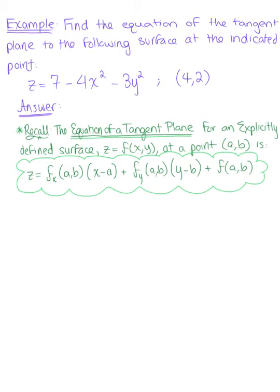Find the equation for the tangent plane defined explicitly at the indicated point. Our explicitly defined surface is z equals 7 minus 4x squared minus 3y squared, and we are given the point (4,2).